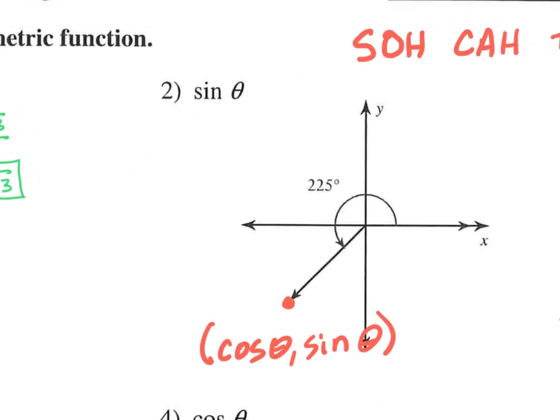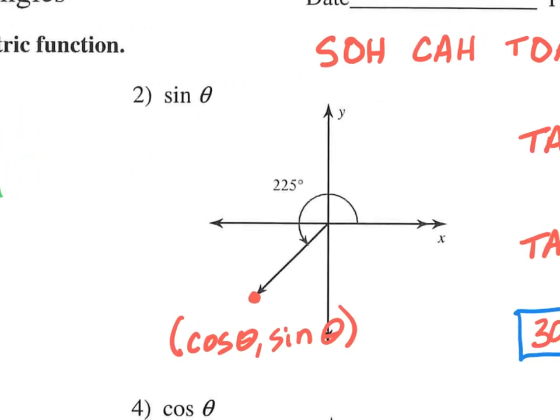Let's look at number 2. I like this one because it's in a different quadrant. We are in quadrant 3 now. Remember the quadrants? That's quadrant 1, quadrant 2, quadrant 3, and quadrant 4.